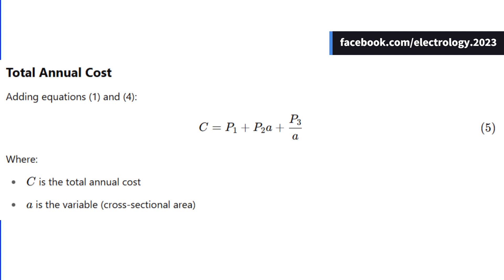Now add these two components together. Total annual cost, which we now denote as C, becomes C equals P1 plus P2A plus P3 by A.